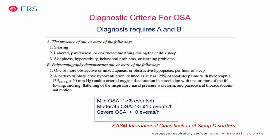OSA diagnosis per the American Academy of Sleep Medicine requires polysomnography. If there is snoring, labored or obstructive breathing during sleep, or sleepiness, hyperactivity, or behavioral problems, and overnight PSG shows one or more obstructive events or obstructive hypoventilation, then the child has OSA. Polysomnography also allows grading of severity: an obstructive apnea-hypopnea index (OAHI) of 1-5 is mild, 5-10 is moderate, and greater than 10 is severe.